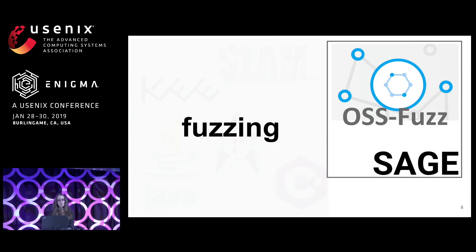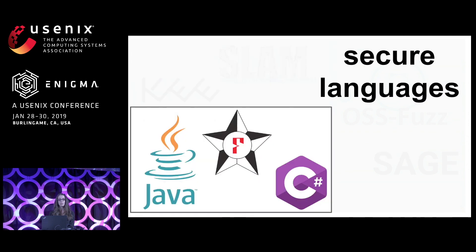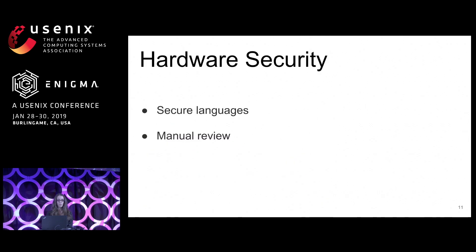These tools range from the less formal, like fuzzing, to find bugs that might be exploitable, to slightly more formal program analysis tools that use static analysis or symbolic execution, to languages with well-defined behavior that at the most formal end allow us to build provably correct systems. But if we look at the state of the art in hardware security, we are lagging behind.